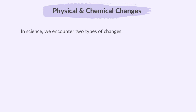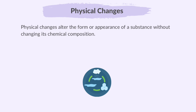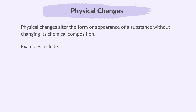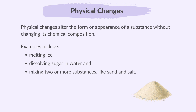In science, we encounter two types of changes: Physical and Chemical. Physical changes alter the form or appearance of a substance without changing its chemical composition. So this type of change does not make any new chemical substances. Examples include melting ice, dissolving sugar in water, and mixing two or more substances, say sand and salt.